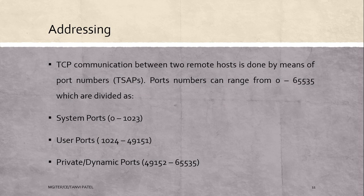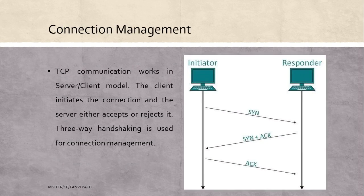Now next is TCP addressing. TCP communication between two remote hosts is done by means of port numbers. Port numbers can range from 0 to 65535, which are divided as: system ports from 0 to 1023, user ports from 1024 to 49151, and private or dynamic ports from 49152 to 65535.